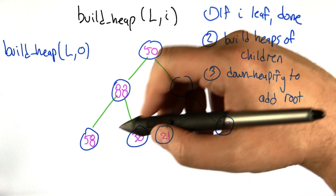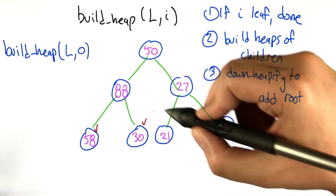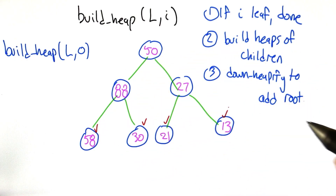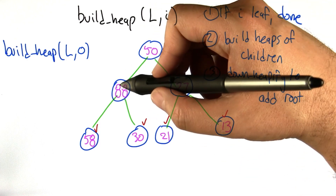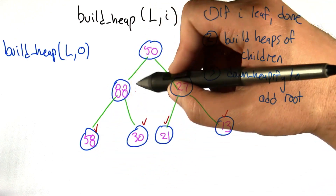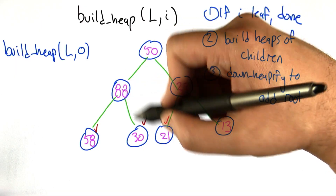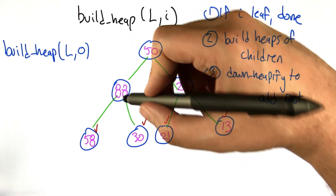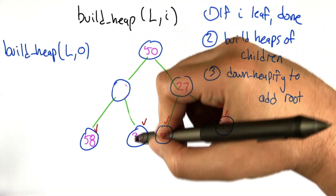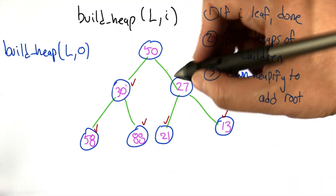So each leaf is already a heap — checking them off as we go. Now to make this subtree into a heap, we do our swap. This is downheapify: 88 gets swapped with 30, because 30 is the smaller of the children. Now that downheapify is completed, this whole subtree is a heap.